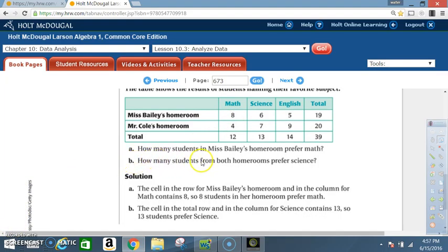B. How many students from both homerooms prefer science? Solution. The cell in the total row and in the column for science contains 13. So 13 students prefer science. In other words the total row is 13. Science column is also 6 plus 7, 13.